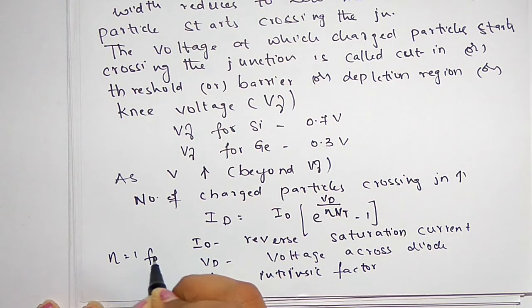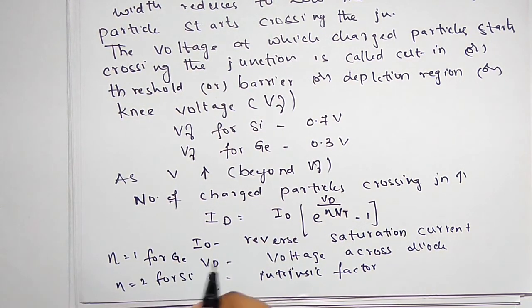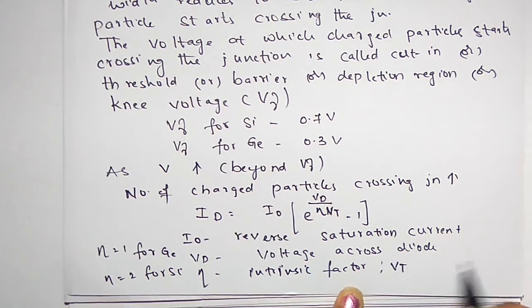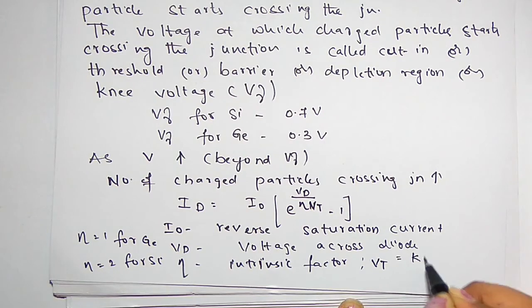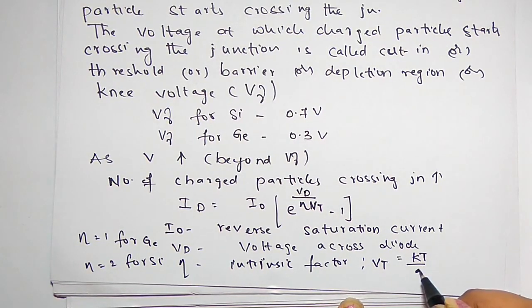Eta equals 1 for germanium and 2 for silicon. Vt is nothing but the thermal voltage, given by Vt = KT/Q, which is the thermal voltage where T is the temperature in Kelvin. K divided by Q can be written as 1/11600, so Vt = T/11600.